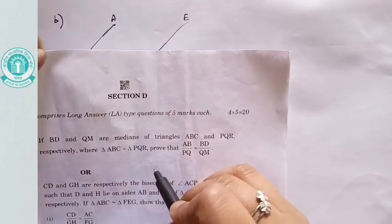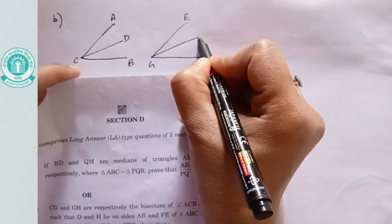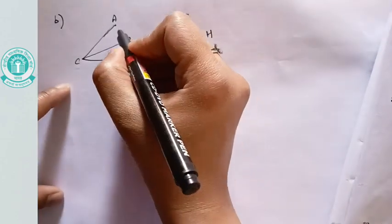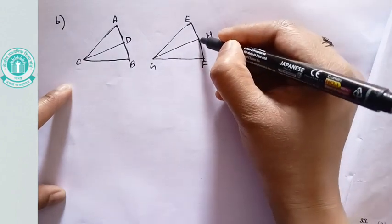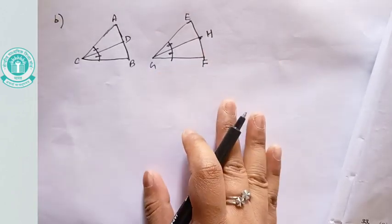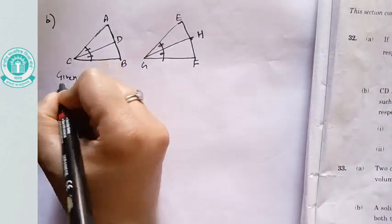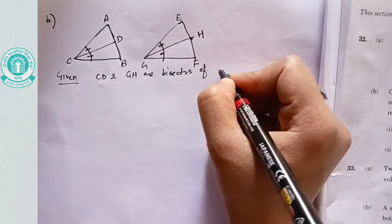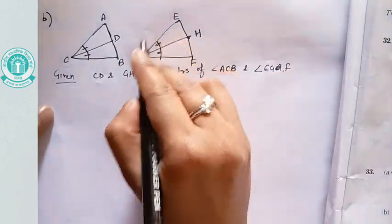It is given that CD and GH are bisectors. CD bisects angle ACB with D lying on AB, and GH bisects angle EGF with H lying on FE. It is further given that these two triangles are similar. So we have to show two parts: CD/GH equals AC/FG, and triangle DCB is similar to triangle HGE.